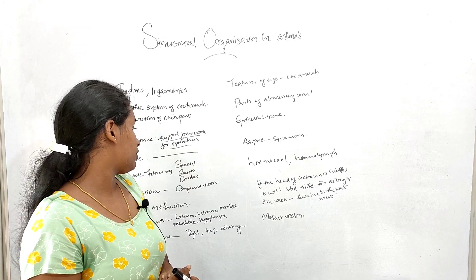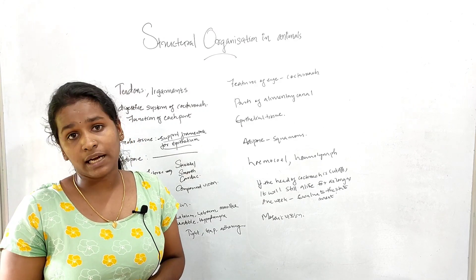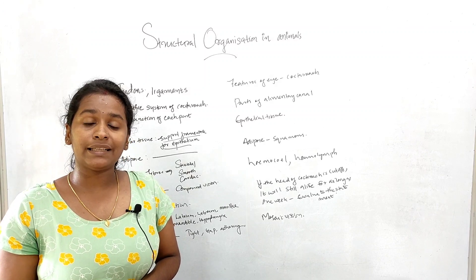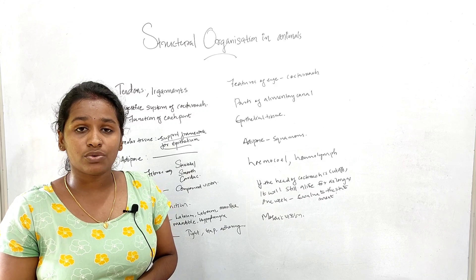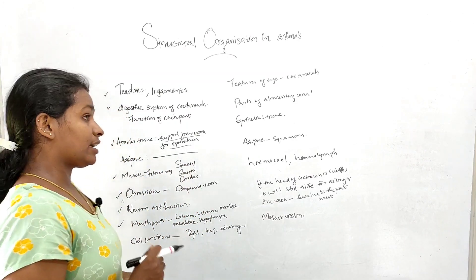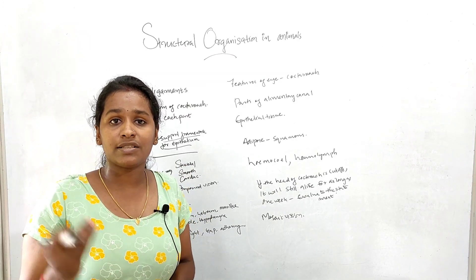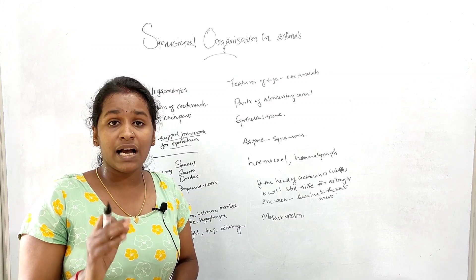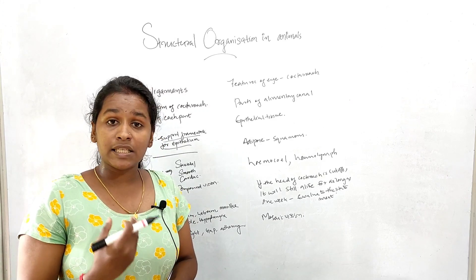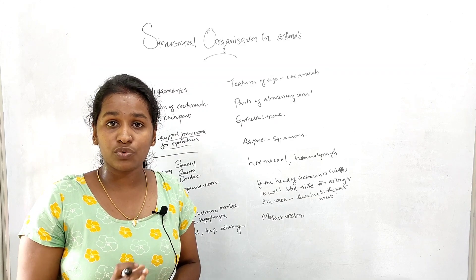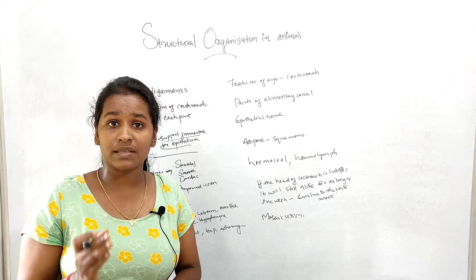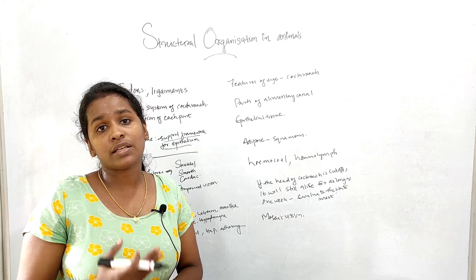We have three types of muscle fibers: skeletal, smooth, and cardiac. Skeletal muscles are striated and voluntary. Smooth muscles have tapered ends, striations are present, and they are involuntary. Cardiac muscle is also present and is involuntary.